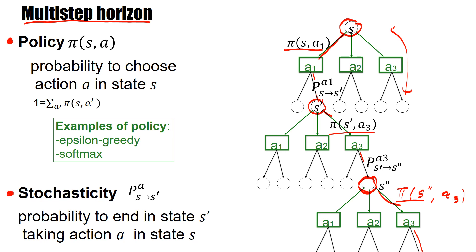You earn your rewards along the way — not necessarily in the first step, maybe only in the fourth step, maybe only in the 127th step. The question is: can we still formulate reinforcement learning in this multi-step context?